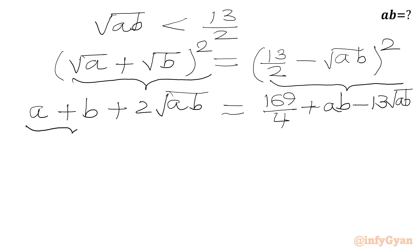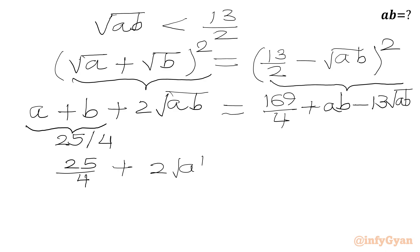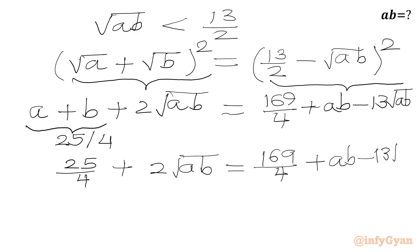From equation 1, a plus b equals 25 over 4. Substituting, the left-hand side becomes 25 over 4 plus 2√(ab), equal to 169 over 4 plus ab minus 13√(ab).